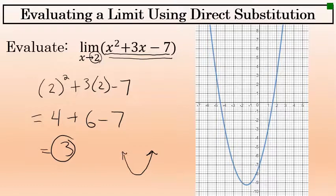This can be verified if you have a graphing utility. The graph of x² + 3x - 7 is shown here on the right in blue. You can see this graph is in fact continuous; there are no gaps or holes. In situations like that, the limit can be evaluated with direct substitution.